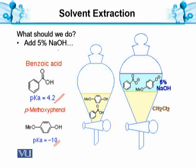What should we do now? If we add 5% Sodium Hydroxide to these two compounds dissolved in Dichloromethane, then both Paramethoxy Phenol and Benzoic Acid will be converted to their salt forms. The sodium salts will definitely be more water-soluble, so Dichloromethane will be empty and both compounds will go into the water layer. Therefore, extraction is not possible in this situation — both end up in the aqueous solution.